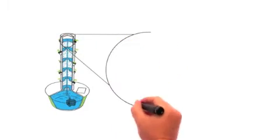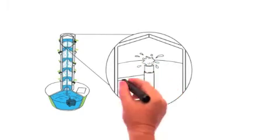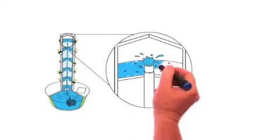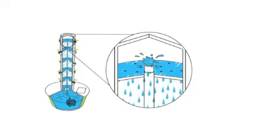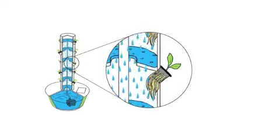On the journey down the tower, the Nutrient Solution feeds the roots and becomes highly oxygenated as it cascades gently down the reservoir. This process is continuous, providing fresh oxygen, water, and nutrients to the roots of the plants.